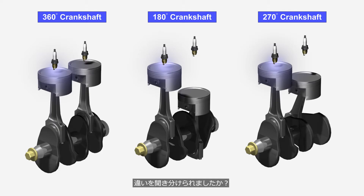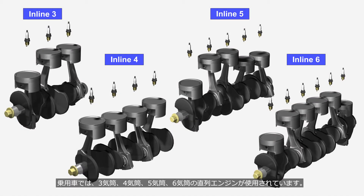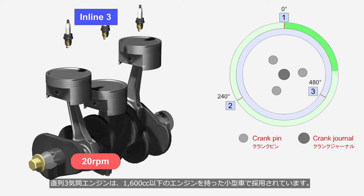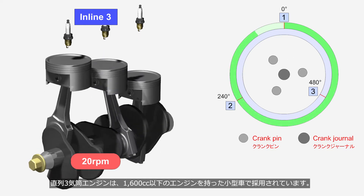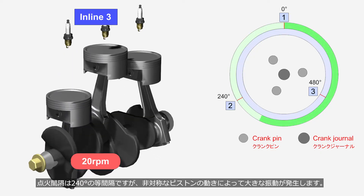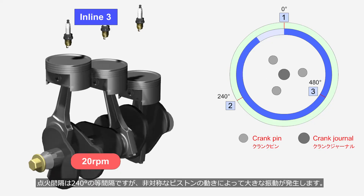Did you notice the difference? In passenger cars, inline engines with 3 cylinders, 4 cylinders, 5 cylinders, and 6 cylinders are used. All these engines have an even firing interval. Inline 3 engines are used in small cars with engines of 1,600cc or less. The firing interval is evenly at 240 degrees, but significant vibrations occur due to the asymmetric movement of the pistons.